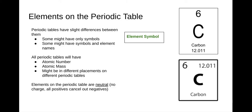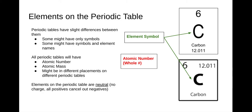Our element symbol is always that big letter — sometimes it's two letters. So for carbon, our element symbol is just a capital C. The atomic number is the whole number of the two numbers on the element. So in one periodic table, carbon might have the six directly above it in the center, or it might be in the upper left corner. Either way, the atomic number for carbon is the whole number, which is six.